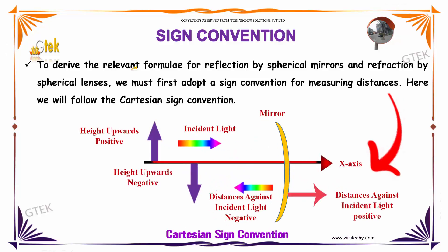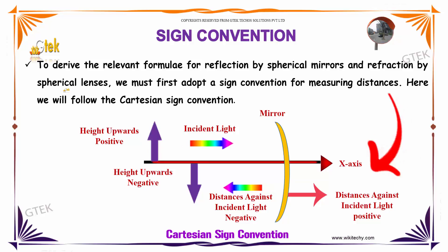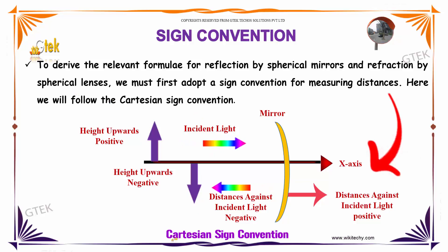To derive the relevant formula for reflection by spherical mirrors and refraction by spherical lenses, we first adopt a Cartesian sign convention. What is it?